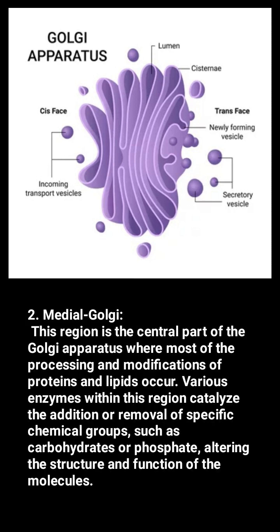2. Medial Golgi. This region is the central part of the Golgi apparatus where most of the processing and modifications of proteins and lipids occur. Various enzymes within this region catalyze the addition or removal of specific chemical groups, such as carbohydrates or phosphate, altering the structure and function of the molecules.